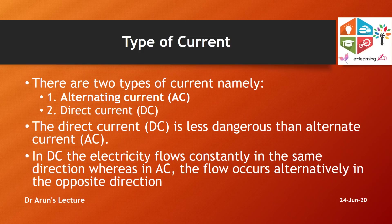Current can be of two types: alternating current (AC) and direct current (DC). DC is less dangerous compared to AC. In DC, electricity flows constantly in the same direction, whereas in AC, the current flows alternately in opposite directions. The key point to remember is that DC is less dangerous than AC.